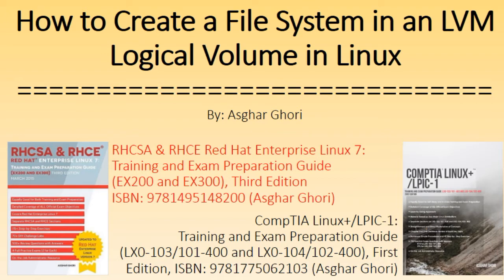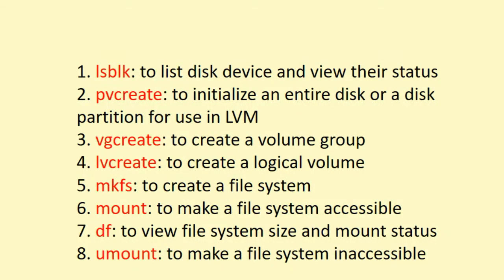For this video I have already allocated a 1 GB disk to my Linux system. Here is a list of commands that I will be using: the lsblk command to list disk devices and view their status. I will be using this command to identify the disk we will be using. pvcreate is an LVM command used to initialize an entire disk or a disk partition for use in LVM. The vgcreate command is to create a volume group — a logical container that houses physical volumes created with pvcreate and the logical volumes created with lvcreate.